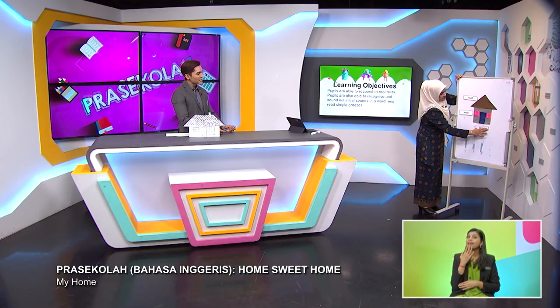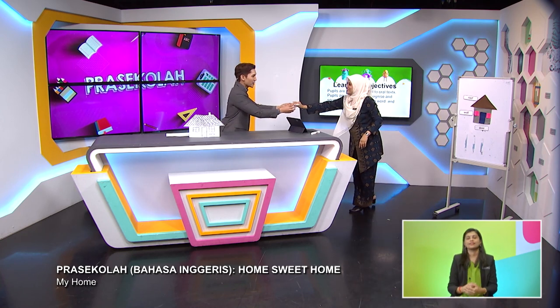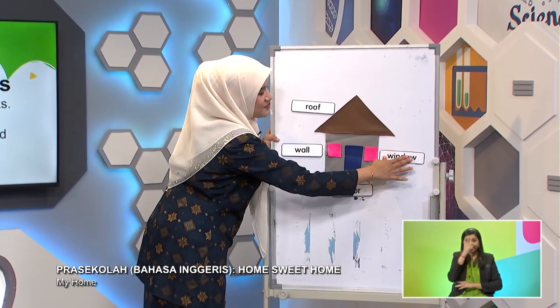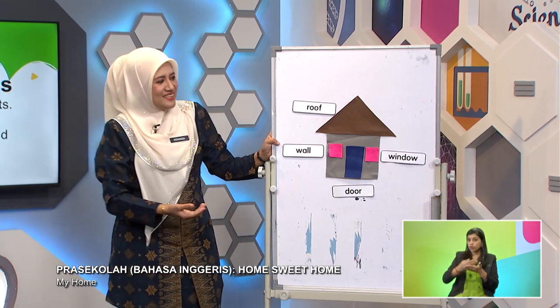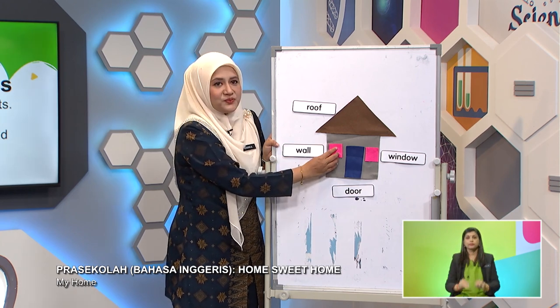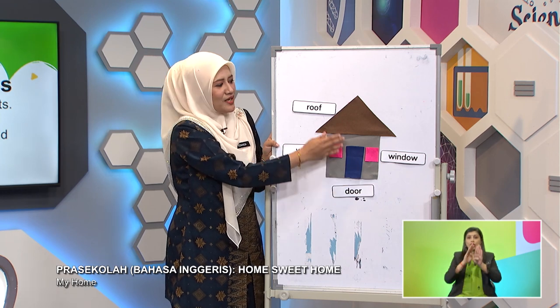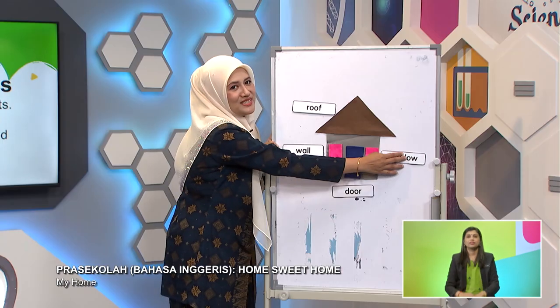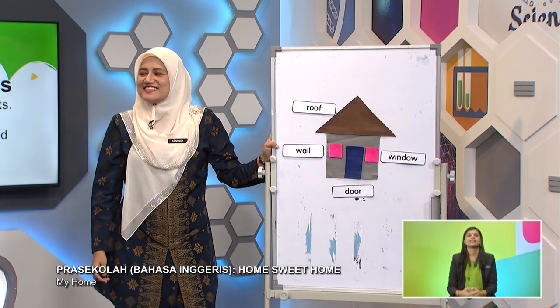It's a very colorful house that we have. We have pink windows, a blue door, a grey wall, and a brown roof. So these are the parts of a house. Let's read together: Roof. Wall. Window. And door. We have a brown roof, a grey wall, a blue door, and a pink window. That's the parts of the house!